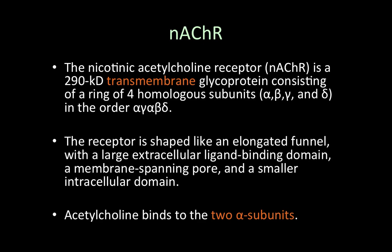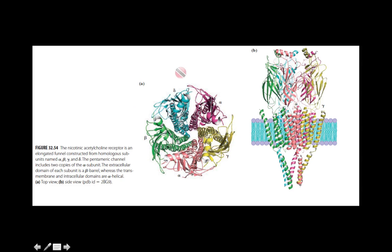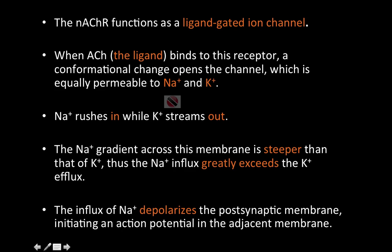There are two binding sites on the two alpha subunits, so for each nicotinic acetylcholine receptor, two molecules of acetylcholine must bind. Now, how does binding of acetylcholine to the nicotinic receptor lead to an action potential? The nicotinic acetylcholine receptor functions as a ligand-gated ion channel.